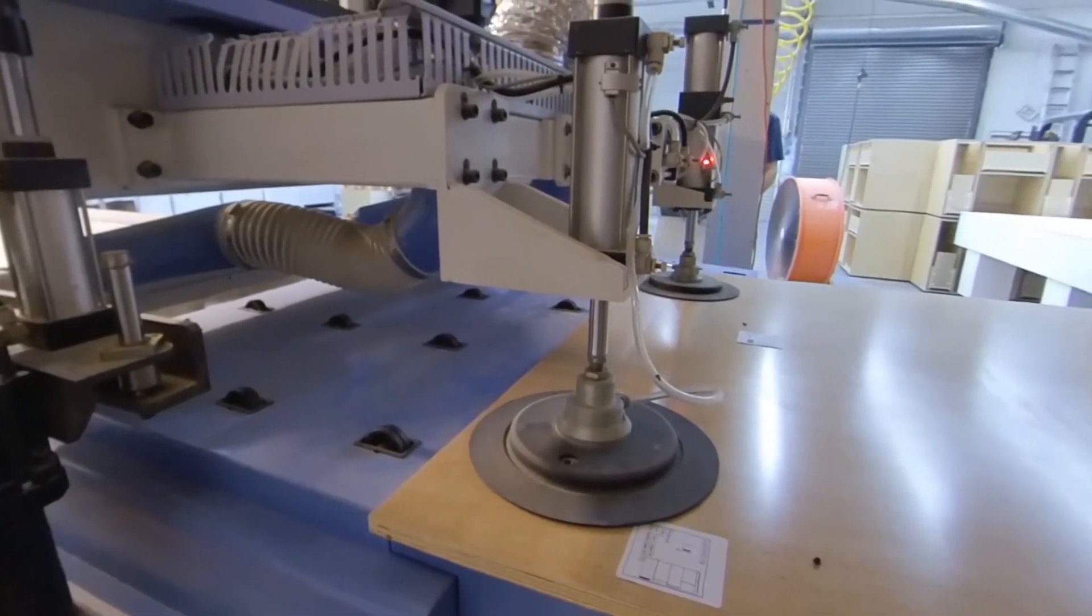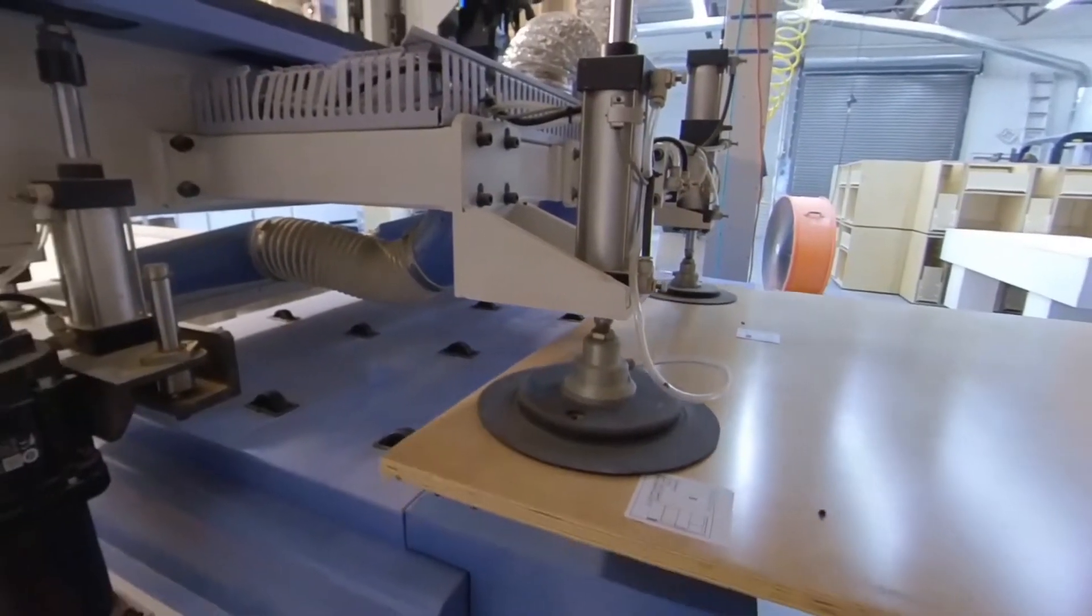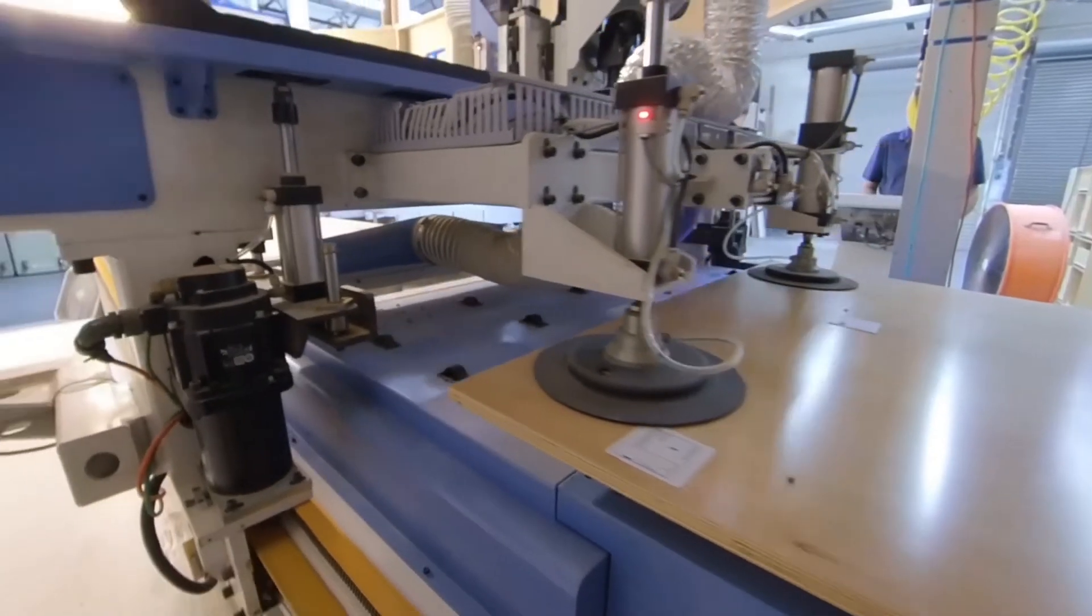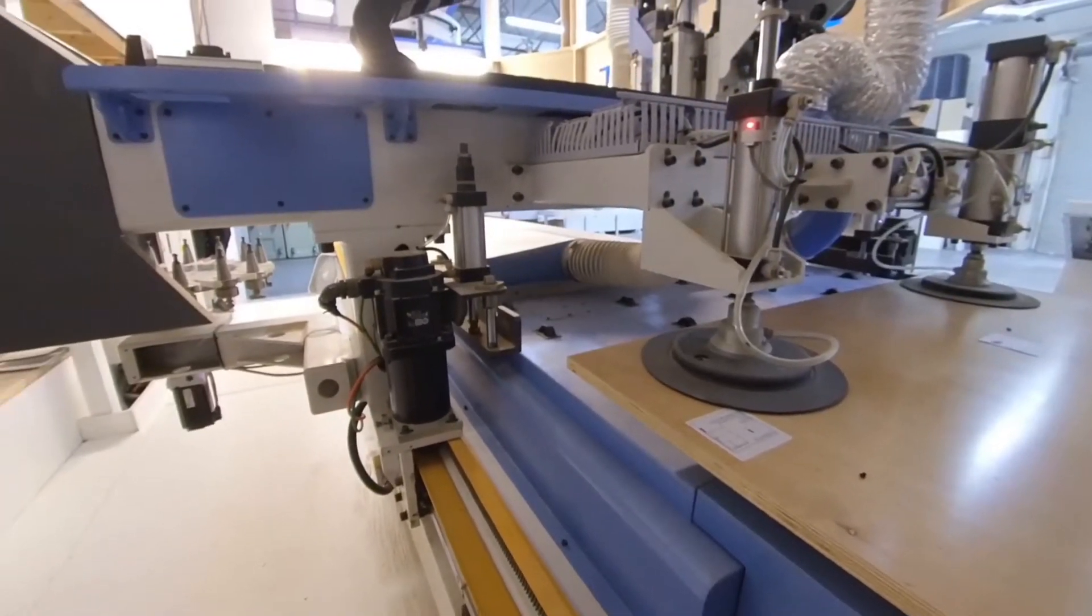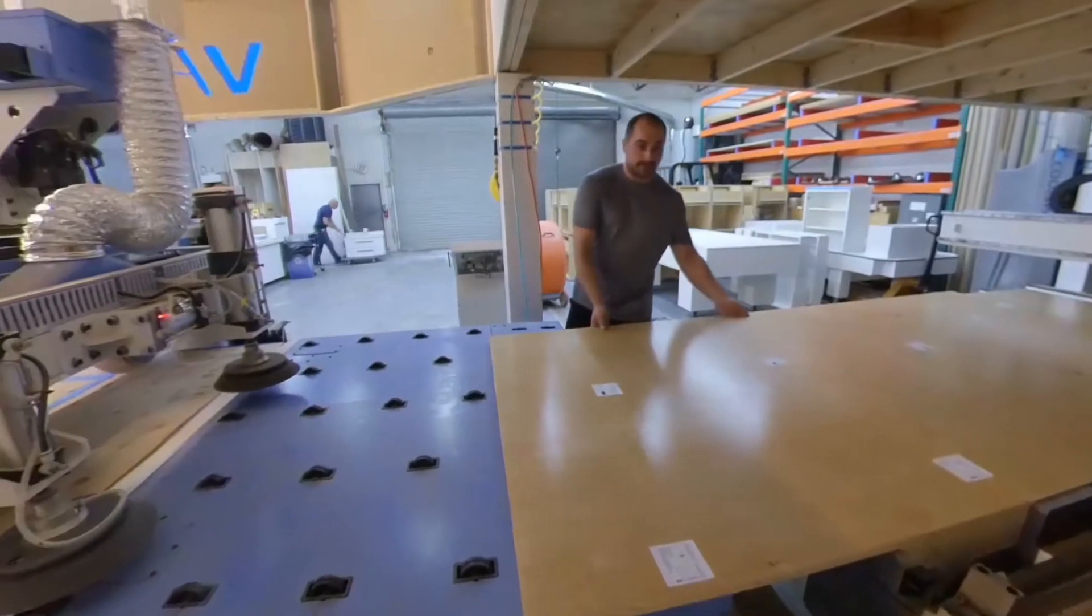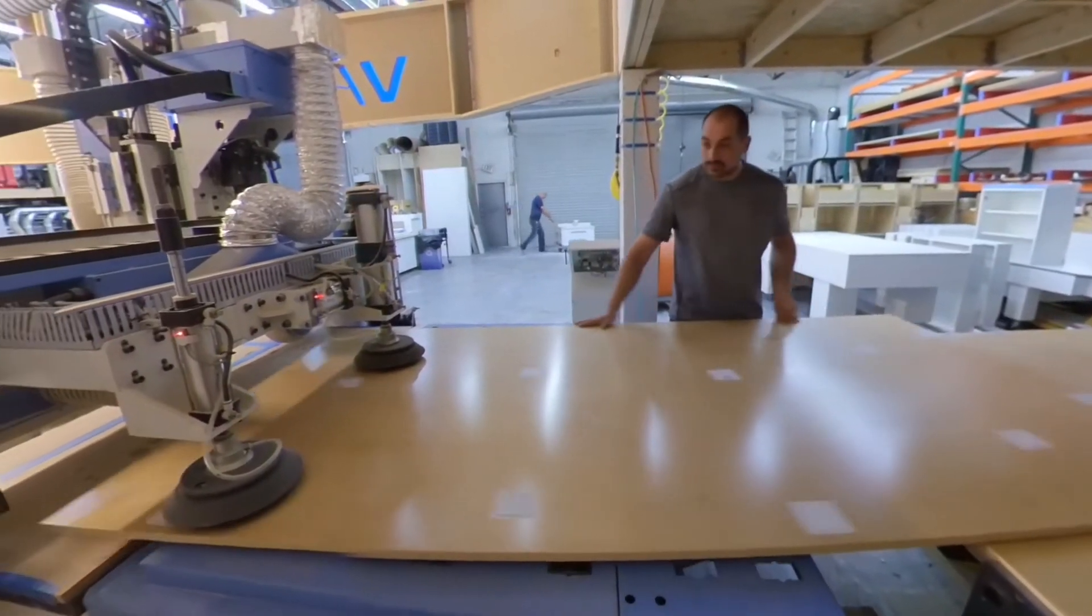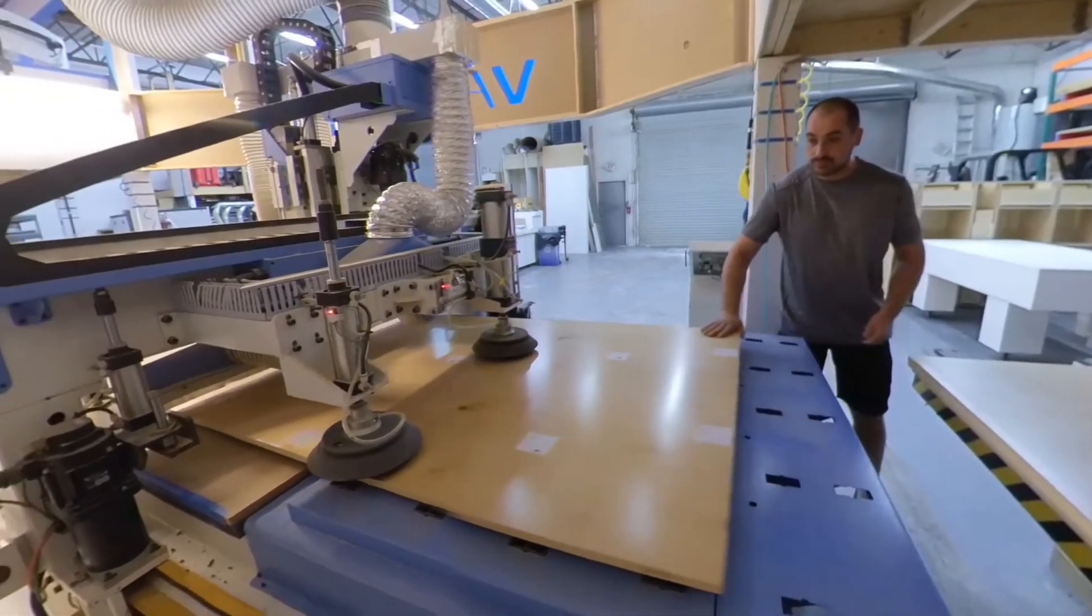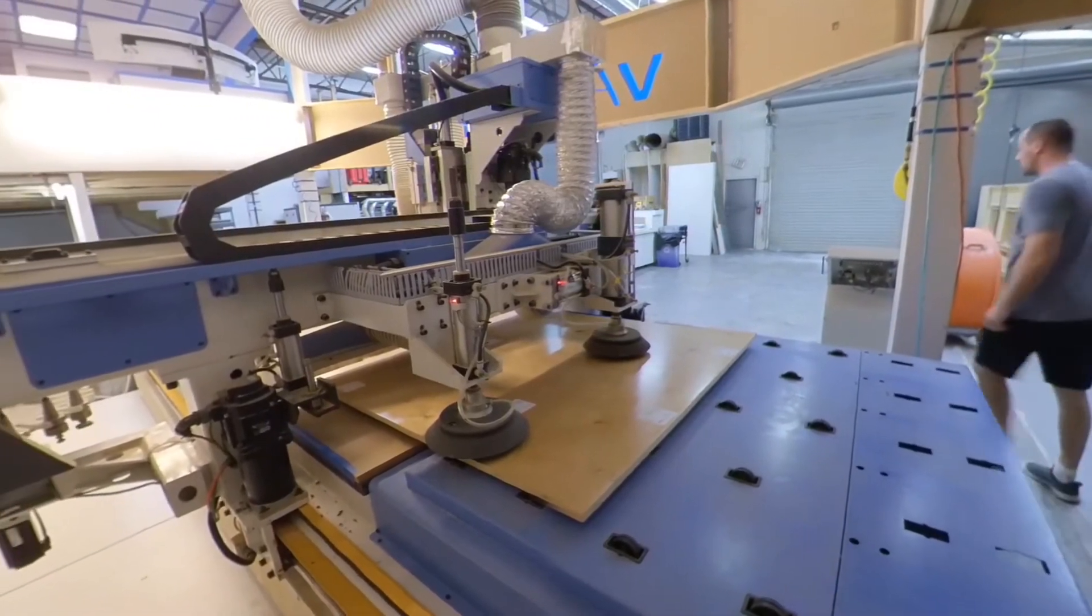Once your custom cabinets are properly prepared and plotted, it's off to Van Burt's fully robotic CNC automatic router. This highly specialized piece of equipment makes sure that all required cuts, drills, and details are 100% precise without error.